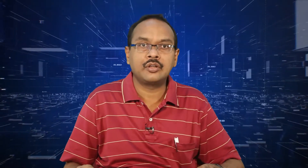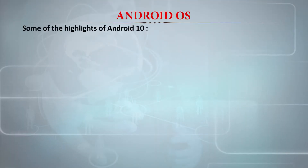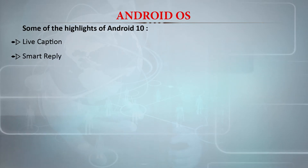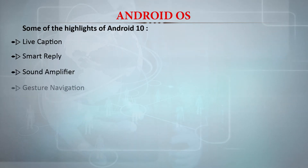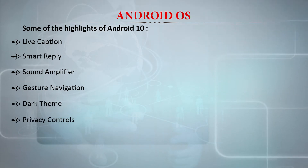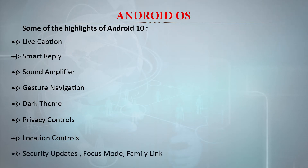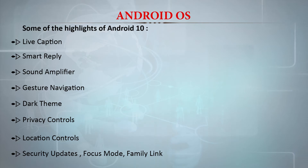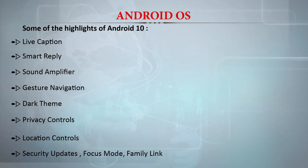One very important product from Google is the Android operating system, and the latest in the sequence is Android 10. Some highlights of Android 10 are: Live Caption, Smart Reply, Sound Amplifier, Gesture Navigation, Dark Theme, Privacy Controls, Location Controls, Security Updates, Focus Mode, and Family Link. These are some of the highlights of Android 10.